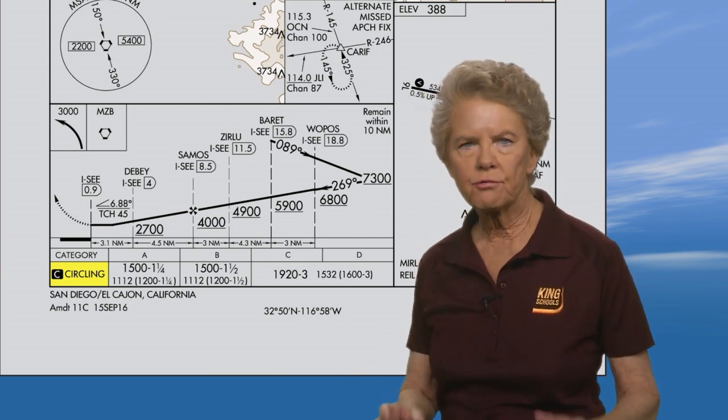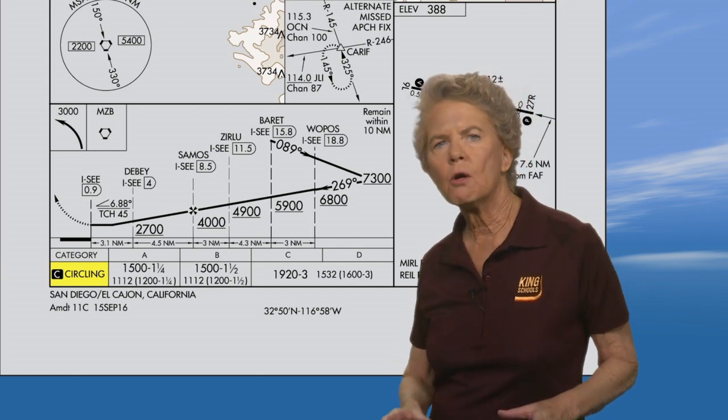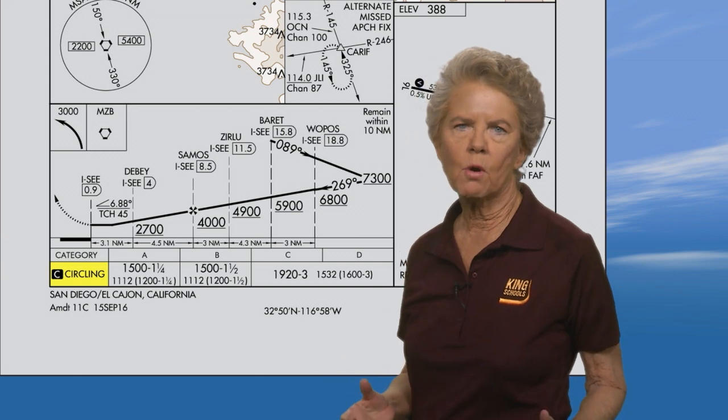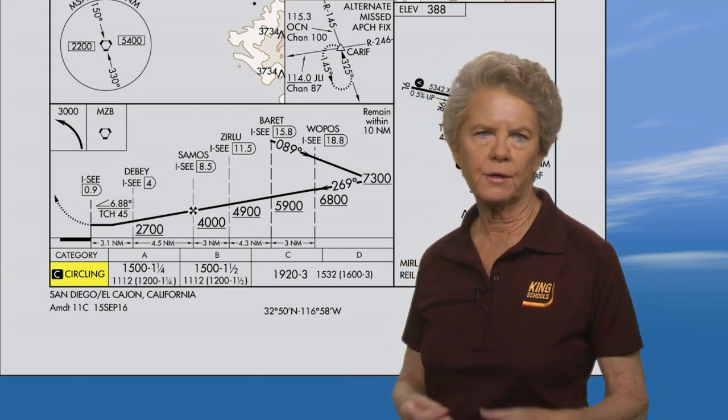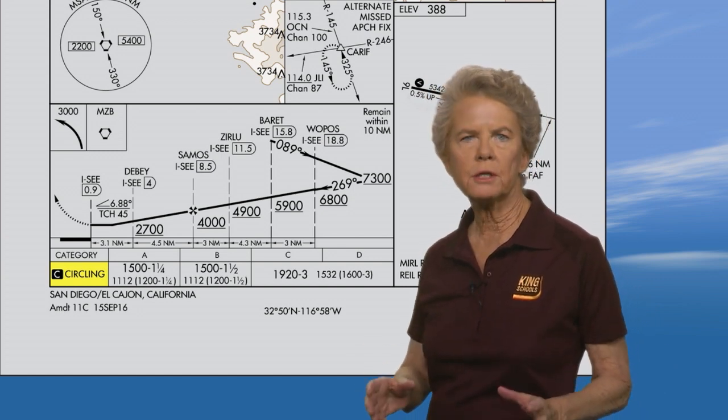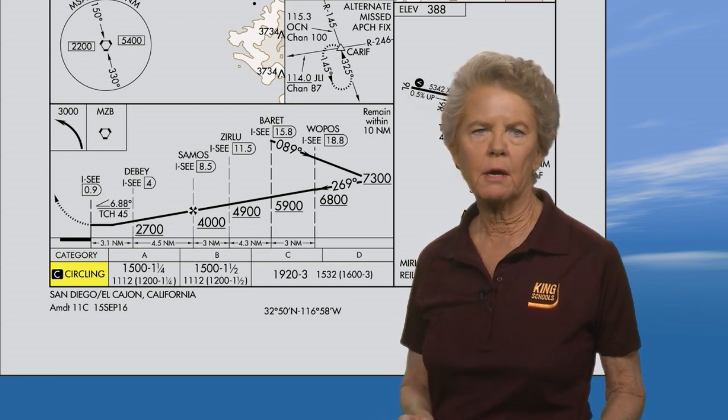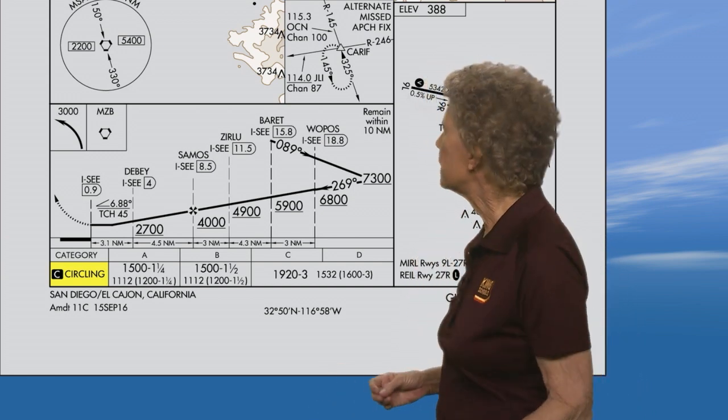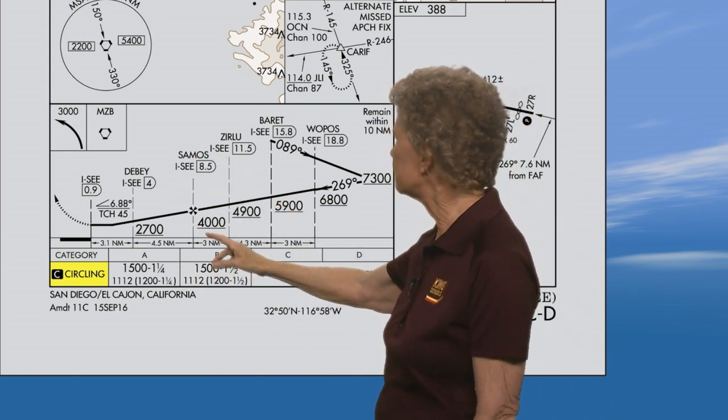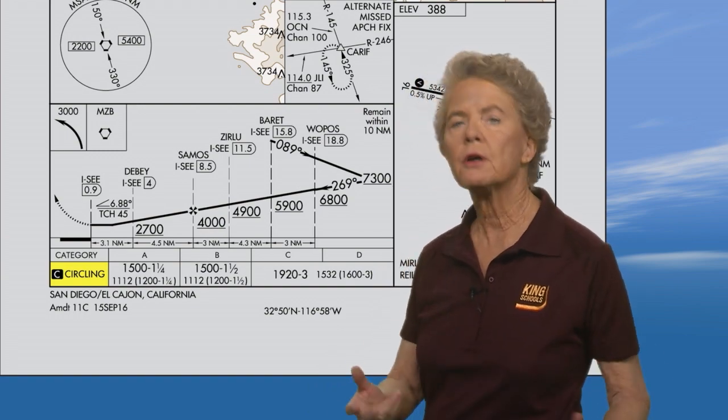In order to have straight-in minimums, the approach has to meet certain criteria, such as how well the approach is lined up with the runways, as well as the rate of descent required between the final approach fix and the runway. Sometimes, the minimum altitude for crossing the final approach fix is higher than usual above the ground due to obstacles and terrain. In fact, you cross Samos, the final approach fix, at 4,000 feet, which is almost two and a half times higher than normal.